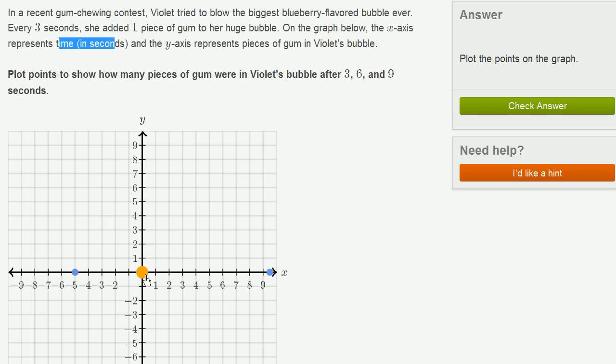So what we care about is three seconds, six seconds, and nine seconds. Every three seconds, we know that she adds one piece of gum.